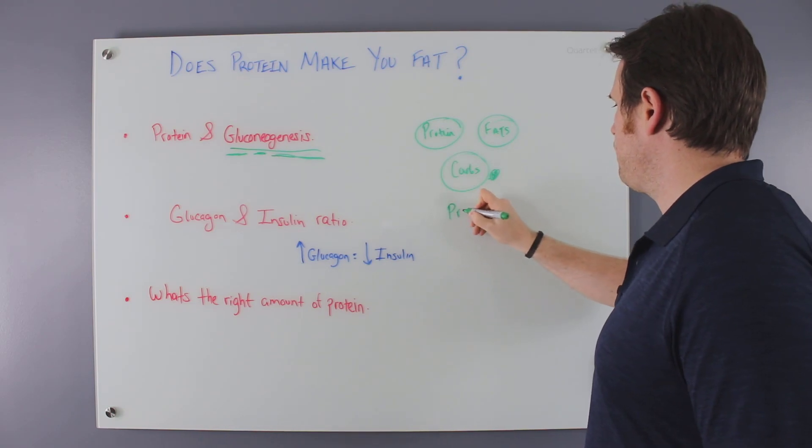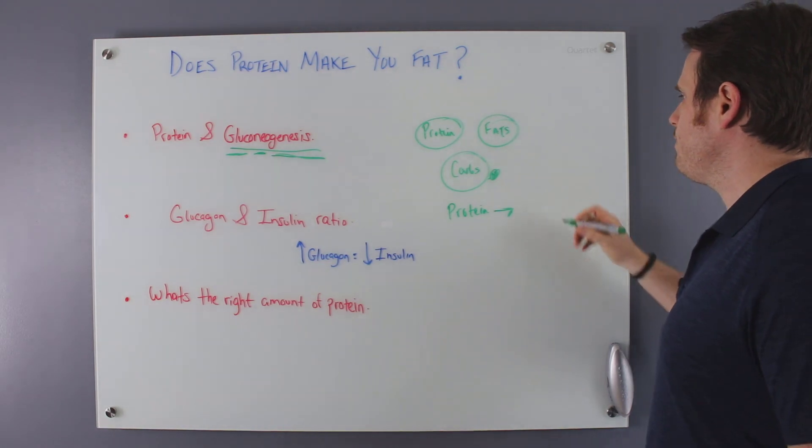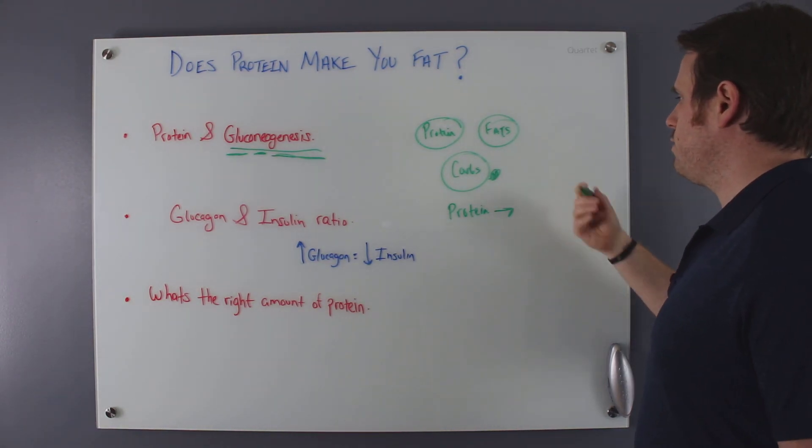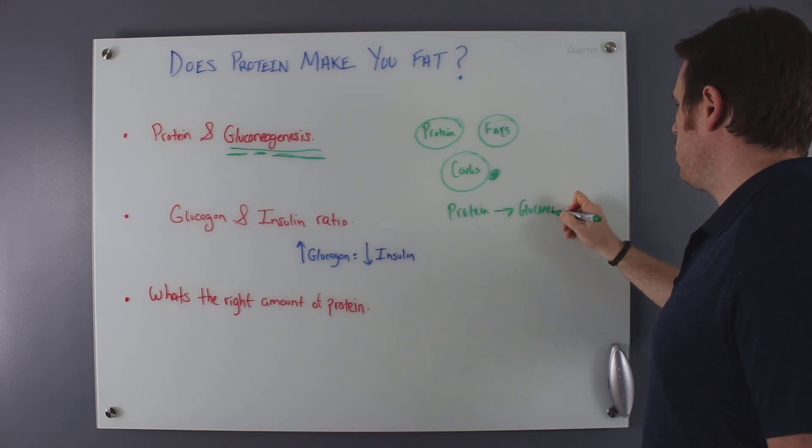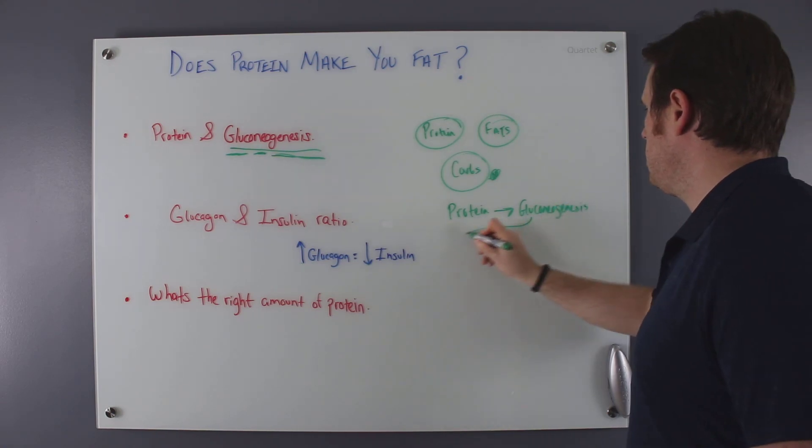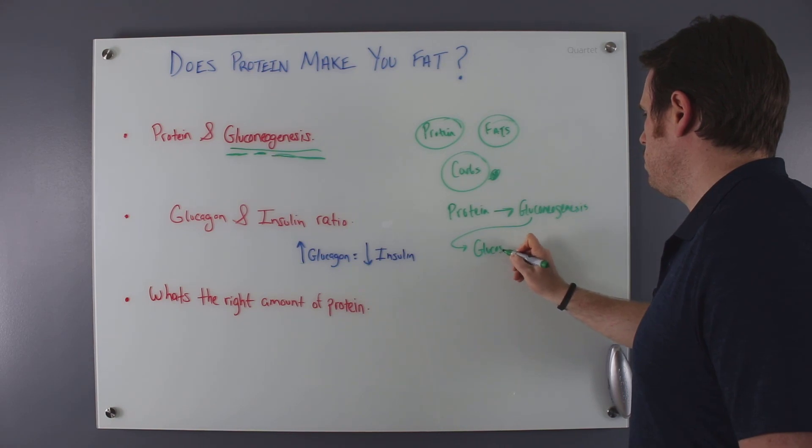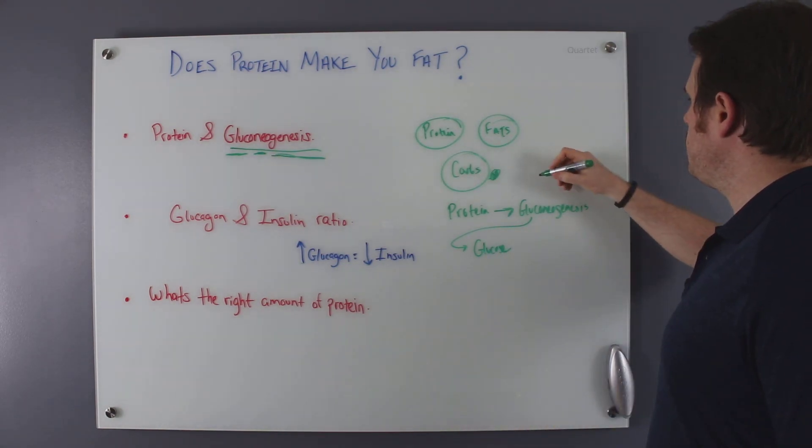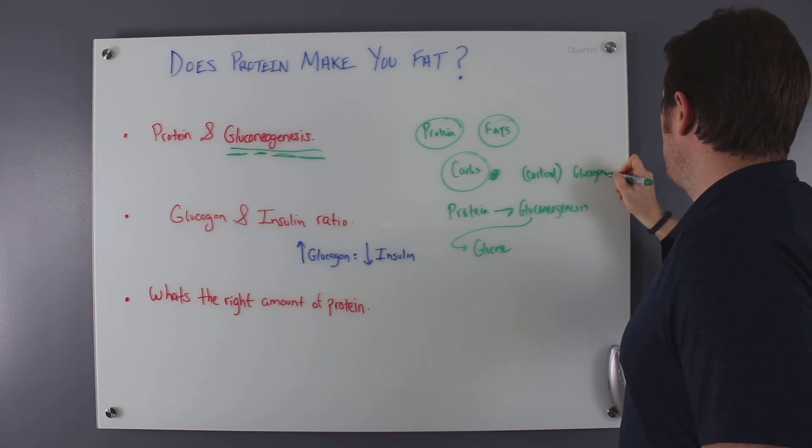So gluconeogenesis is something like this: your body taking protein, protein gets converted into glucose where our body will take that protein and convert it into glucose. And we do this primarily with two major hormones, cortisol and glucagon.